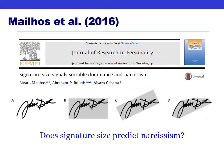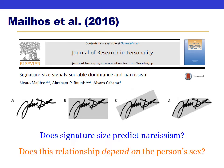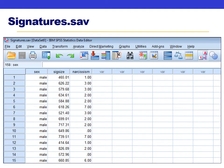We want to know not only whether there is a relationship between signature size and narcissism, but whether the nature of that relationship differs depending on whether someone is a man or a woman. We'll use the data file signatures.sav. For each person we know their sex, their signature size (larger numbers = bigger signature), and their narcissism score (larger numbers = more narcissism).